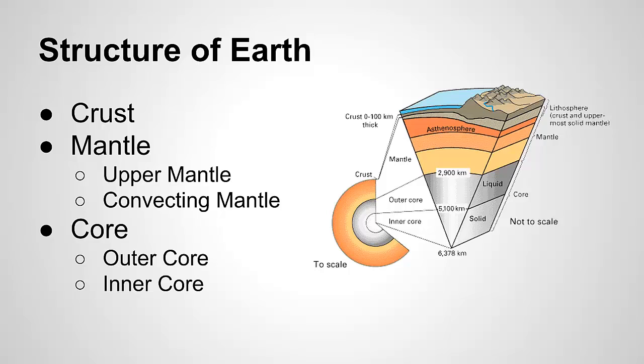The mantle can actually be broken up into what's called the upper mantle and the convecting mantle. We're going to talk more about that convecting mantle in another lesson. The core can be subdivided into the outer core and the inner core, the inner core being at the very center of our planet and the outer core surrounding it, between the inner core and the mantle.